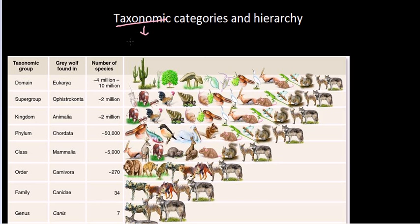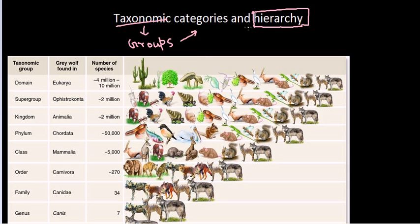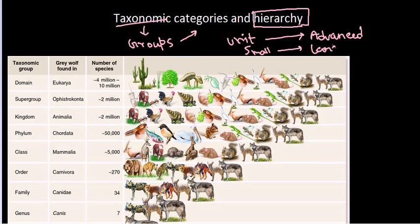Now, once you put organisms in different groups or categories, those categories must have some common characteristics or common features. Based on their common characteristics, we put different organisms in those categories. Once you put them in different categories, we can build up what is called a hierarchy of taxonomic classification. Hierarchy means it is based on some series, from the smallest unit to the largest unit — from the smallest foundation to the largest foundation of organizing all those different organisms in the taxonomic field.